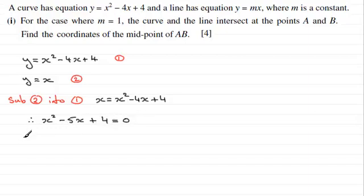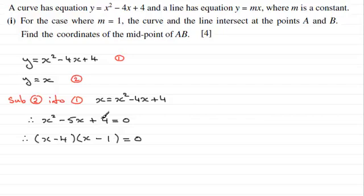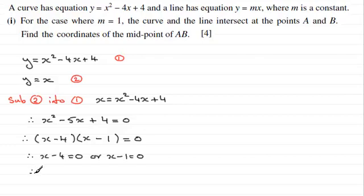This quadratic equation factorises. We'll have two factors: x minus 4 and x minus 1. Minus 4 times minus 1 gives us the plus 4 on the end, and minus 4x minus another x gives us the minus 5x. So each factor equals 0, meaning x could equal 4 (adding 4 to both sides) or x equals 1 (adding 1 to both sides).